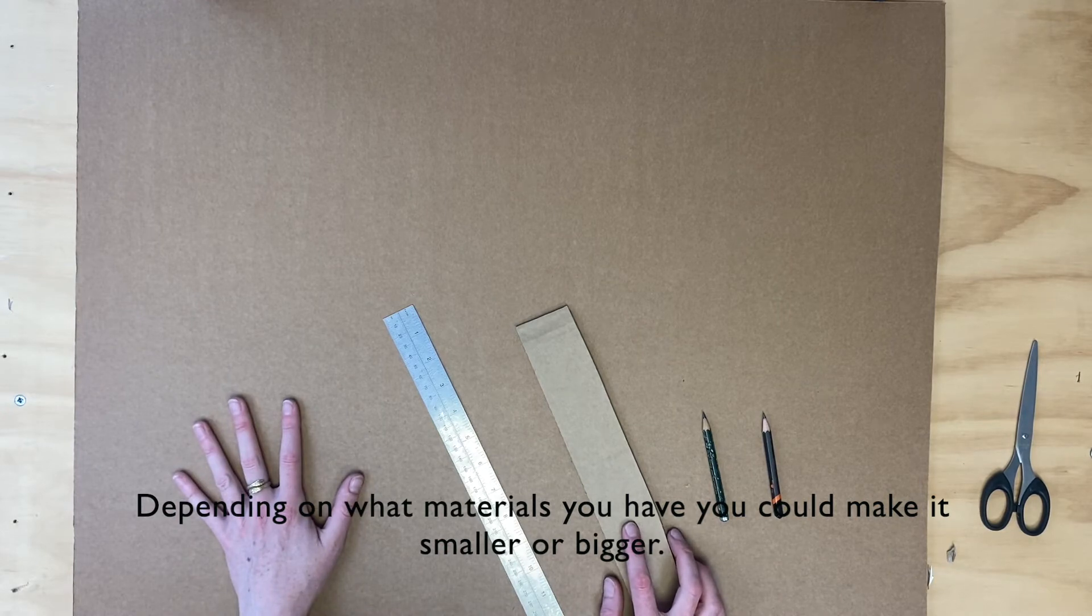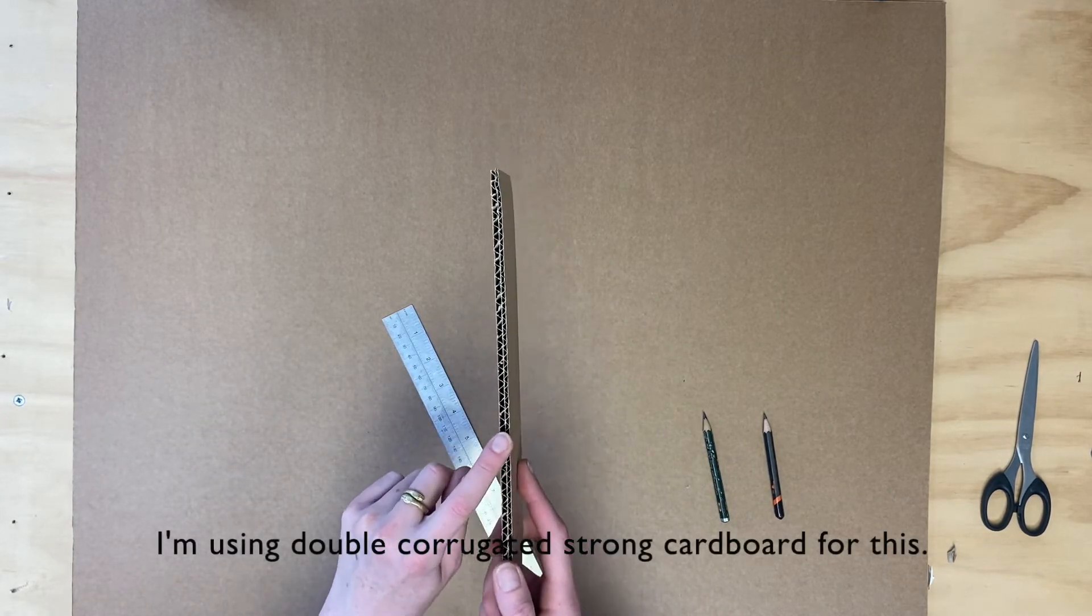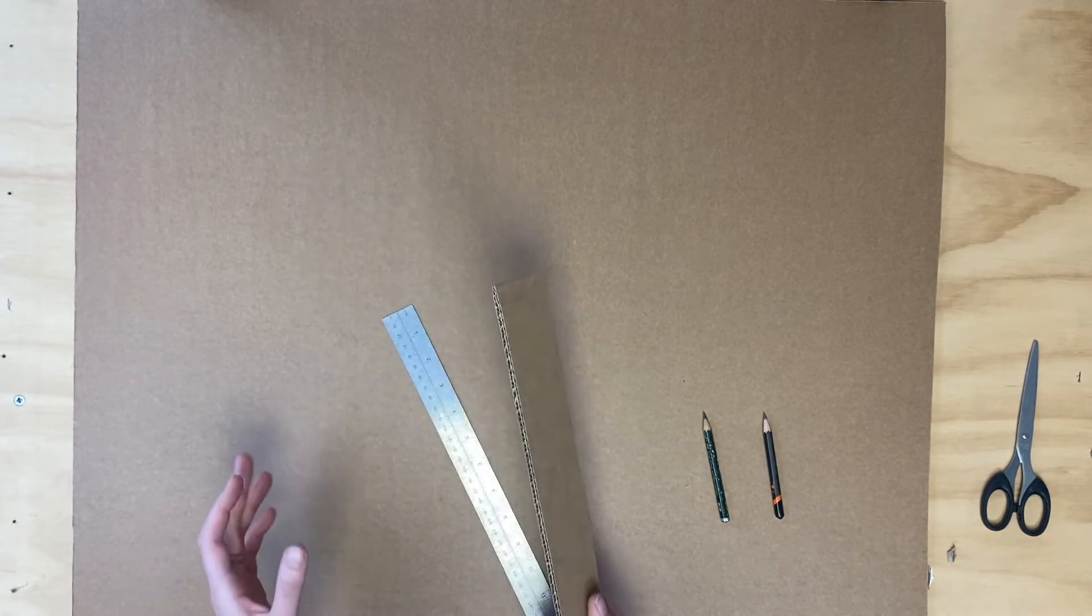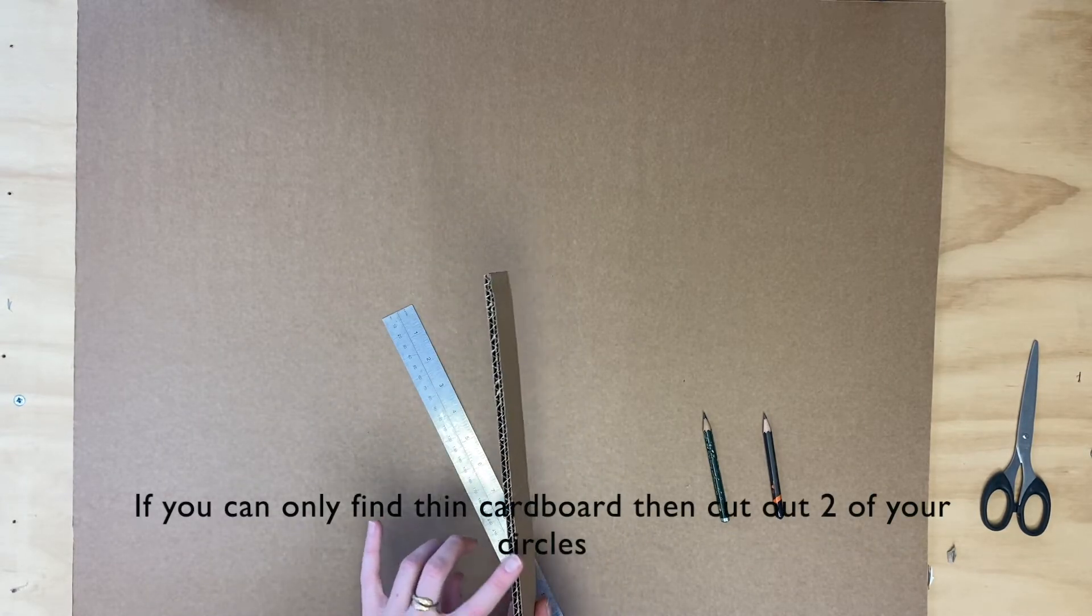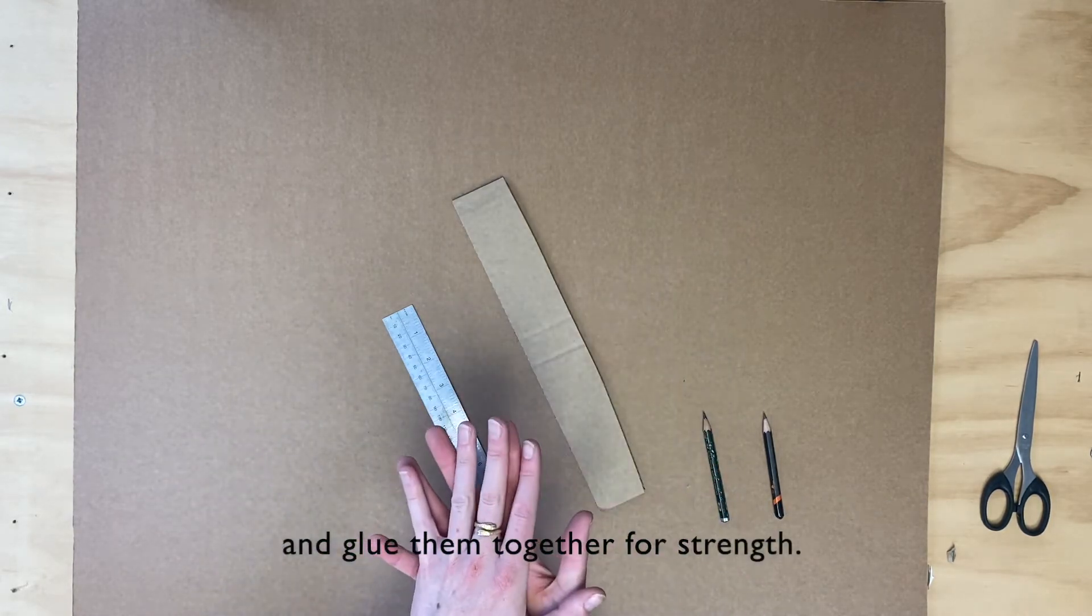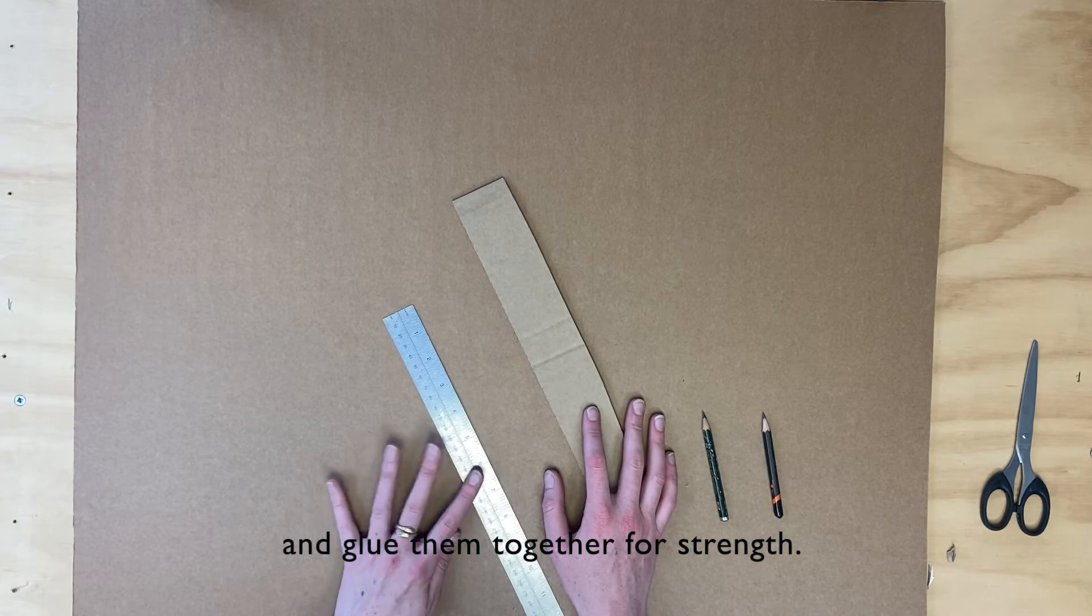For the base layer, you want the cardboard to be nice and strong, so I'm using double layer. If you can't find any stronger cardboard like this, you can cut out two of the thinner layer cardboard. So if it's a bit wobbly, you can cut out two of the circles and stick them together and that will make it a bit stronger.